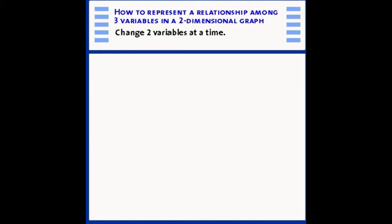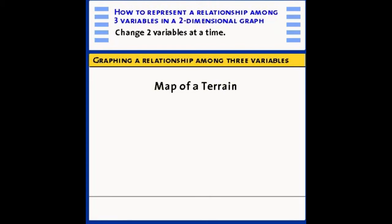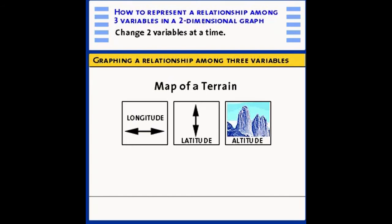Suppose we're interested in a relationship among three variables, and a good example would be making a map of a terrain. In this case, you've got three variables that change as you move across a terrain. One is your east-west coordinate, called your longitude. The other is your north-south coordinate, called your latitude. And finally, there is the distance that the terrain lies above sea level, or below sea level, the altitude, or the height of the point.